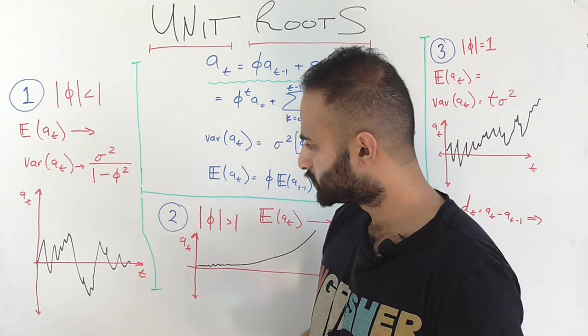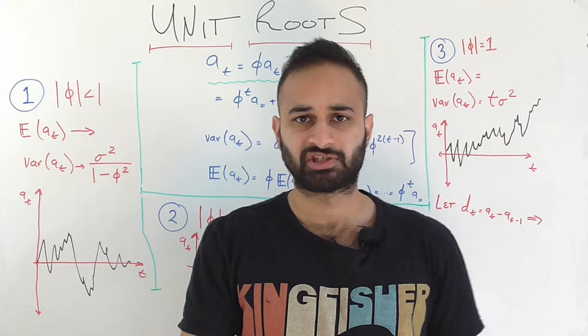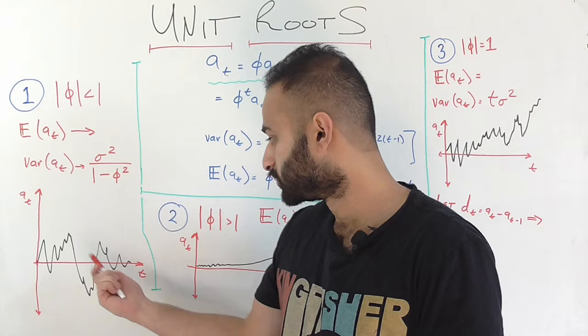Let's look at this first one. It seems to have somewhat of a constant mean over time. The variance also is not changing too drastically, and it doesn't look like there's a big seasonal component. So maybe some further analysis is needed, but just visually we would say that's stationary.